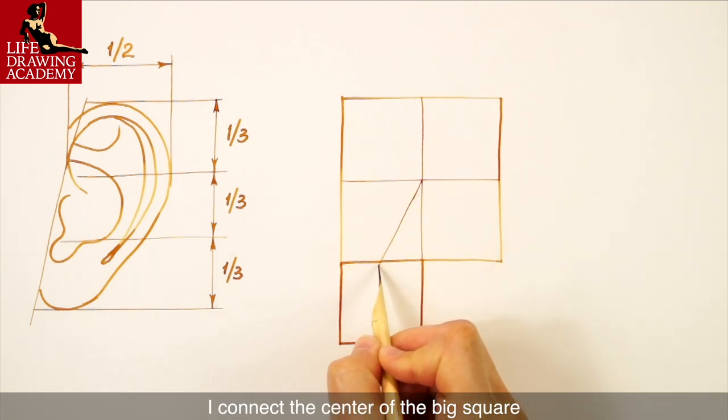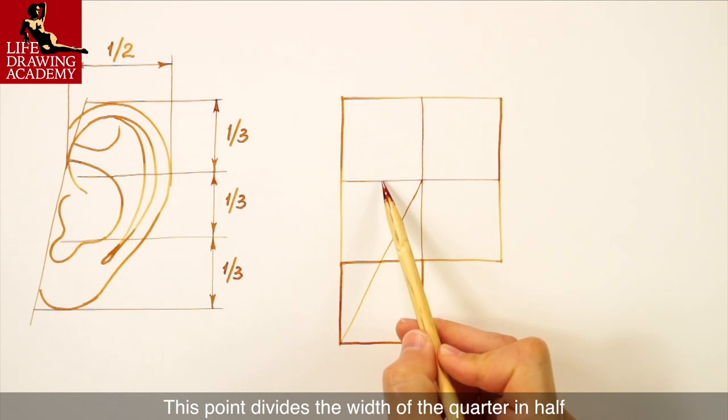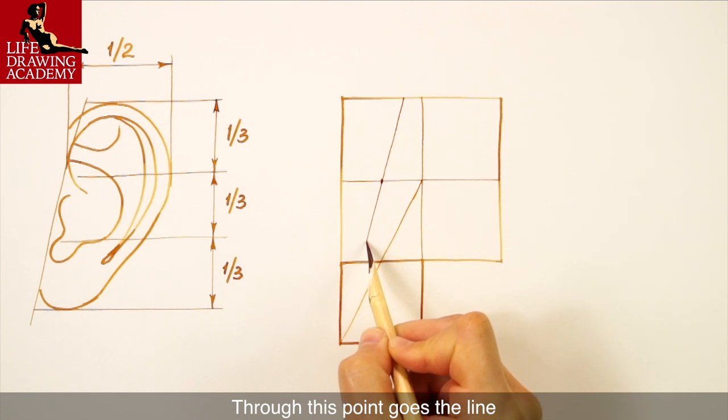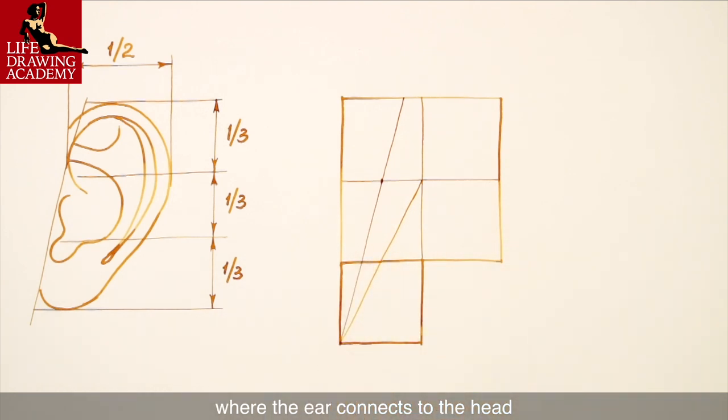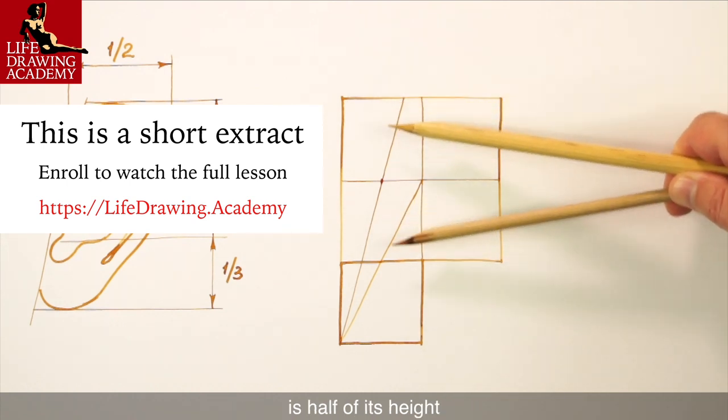I connect the center of the big square with the bottom corner. This point divides the width of the quarter in half. Through this point goes the line where the ear connects to the head. As you can see, the width of the ear is half of its height.